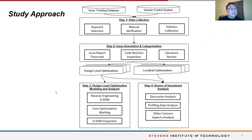Our approach is composed of four major steps. First, collect the performance issues. Second, annotate the issue reports and categorize the issues by root cause. Third, analyze the design-level optimizations using the modeling technique. And finally, analyze the return on investment of performance issues. I will explain each step in more detail in the following slides.